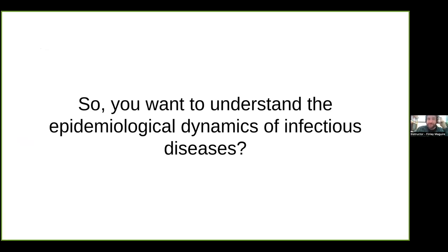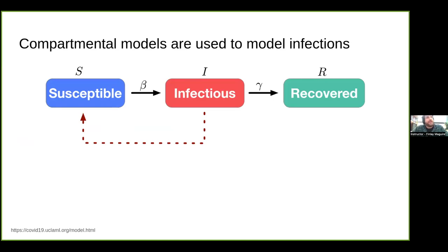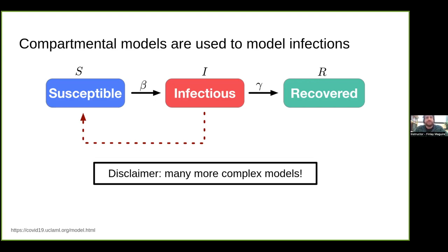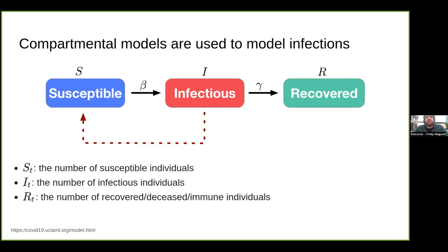To understand the epidemiological dynamics of infectious diseases, the standard approach uses case information with traditional epidemiological statistical models. The most common is the compartmental SIR model: susceptible, infectious, and recovered. There are many more complicated models, but this is one of the simplest. These models look at the dynamics of movement between the number of susceptible, infected, and recovered people, with key parameters beta (infection rate) and gamma (recovery rate).